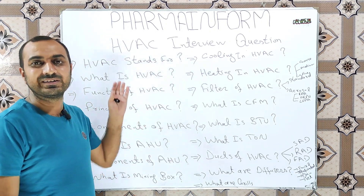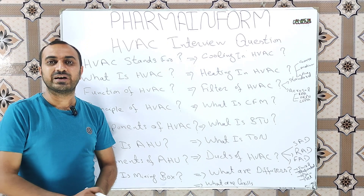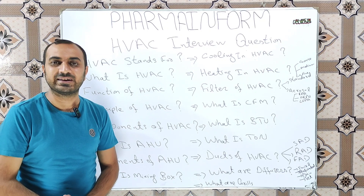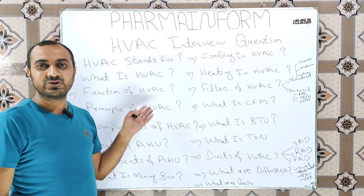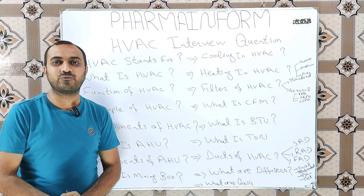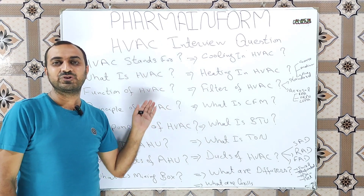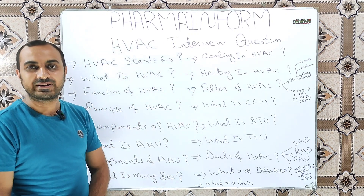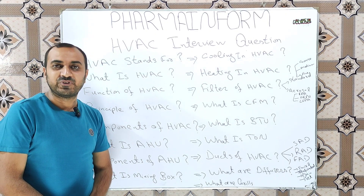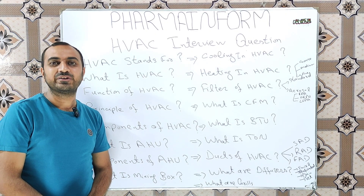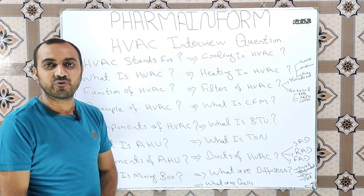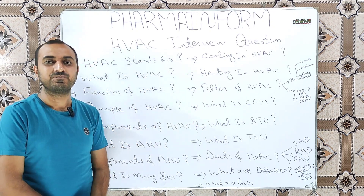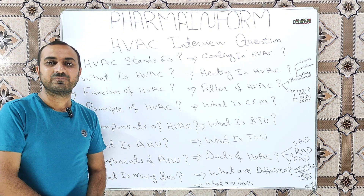The next question is: what is the AHU? AHU is the air handling unit and it is the main component of the heating, ventilation, and air conditioning system. AHU is also known as the lungs of the HVAC. The components of AHU are the metal box, mixing box, filters, heating coils, cooling coils, blower or fan system, and humidification or dehumidification system.